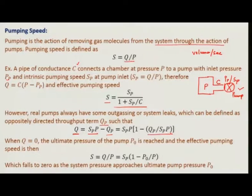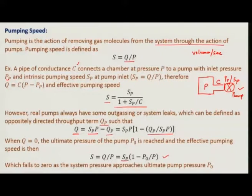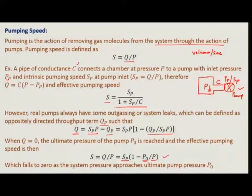If there is some leak, what is the ultimate pressure you can reach using a pump with pumping speed Sp? An expression defines this ultimate pressure P0. As you remove more and more gas from the chamber, the pressure drops, and at some point there will be no difference left between the chamber pressure and the pump inlet pressure. That is the ultimate pressure achievable by that pumping system.